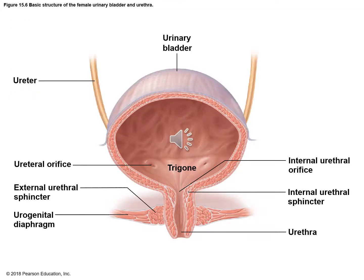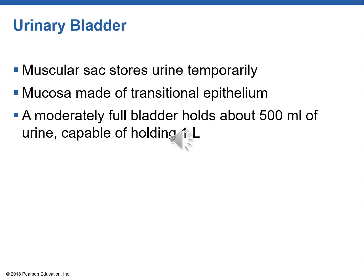The bladder can stretch to hold more urine because it has transitional epithelium, which allows stretch, and it has some layers of muscle. The bladder has two sphincters — muscle bands that can tighten around the urethra. The internal urethral sphincter is involuntary, meaning we don't have control over it. Fortunately, we also have the external urethral sphincter, which is voluntary, so we can for the most part control when urination happens. A Foley catheter — basically a tube that goes into the bladder with a bulb on the end — is designed to allow drainage and collection of urine from the bladder into a graduated canister so the amount of urine produced can be measured.